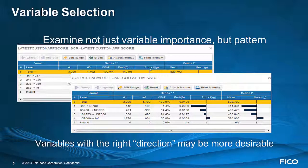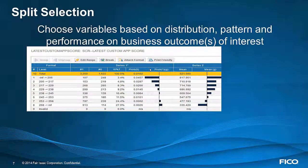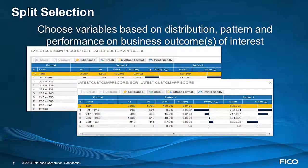Here we see another variable where the average revenue goes up as the score goes up. That might be more attractive, although of course it depends how predictive it is. So you're choosing variables based on the distribution of the splits, the pattern, and their performance on a variety of business outcomes. You might start with the variables already split out, or you might let the software choose the best splits for you — you can group them manually, or you can let the software do it.